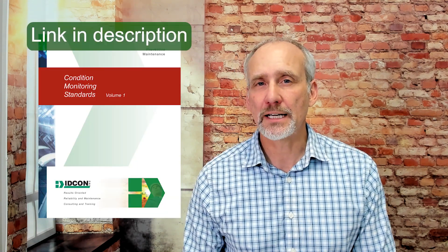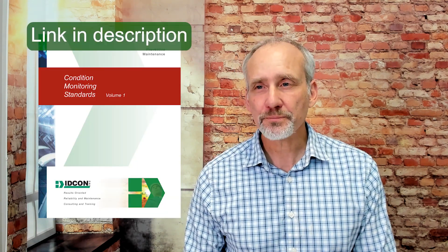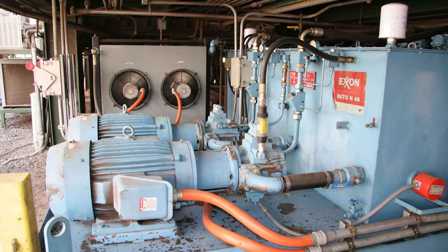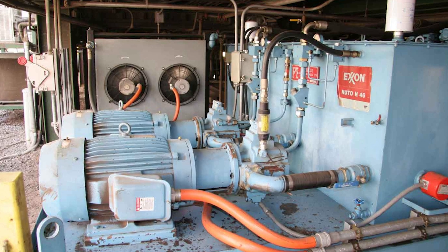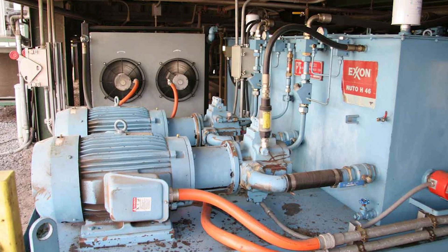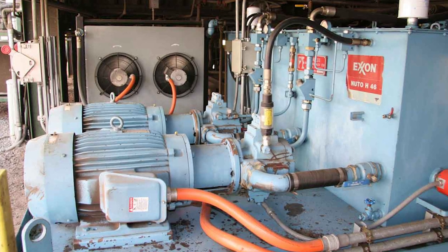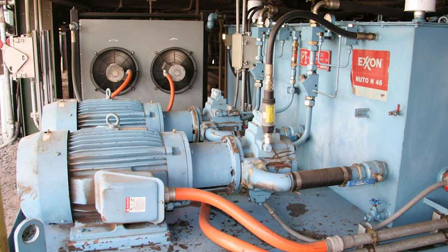We also looked at how to get them in a database. Now we have the tasks. We've used an AC motor as an example — we had about 11 or 12 tasks for that AC motor. Some are going to be on the run, some in the shutdown. But most of it for the electrical motor is going to be on the run when it's running.